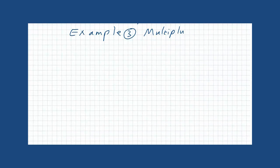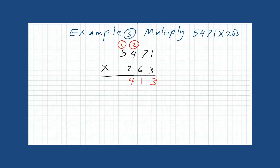Example 3. Multiply 5,471 times 263. Start multiplying the ones first. 3 times 1 is 3. 3 times 7 is 21. 3 times 4, 12 plus 2 is 14.